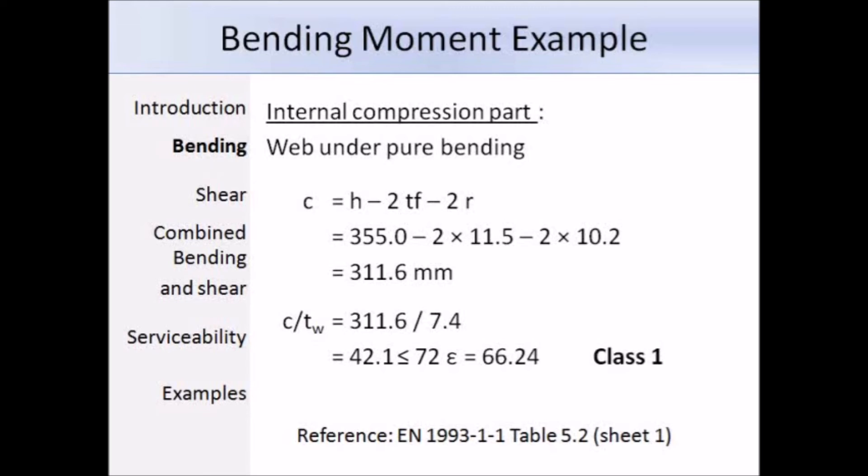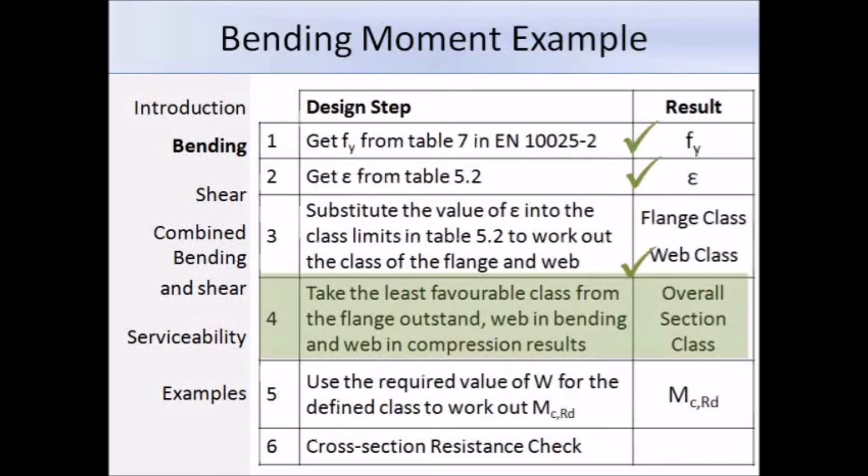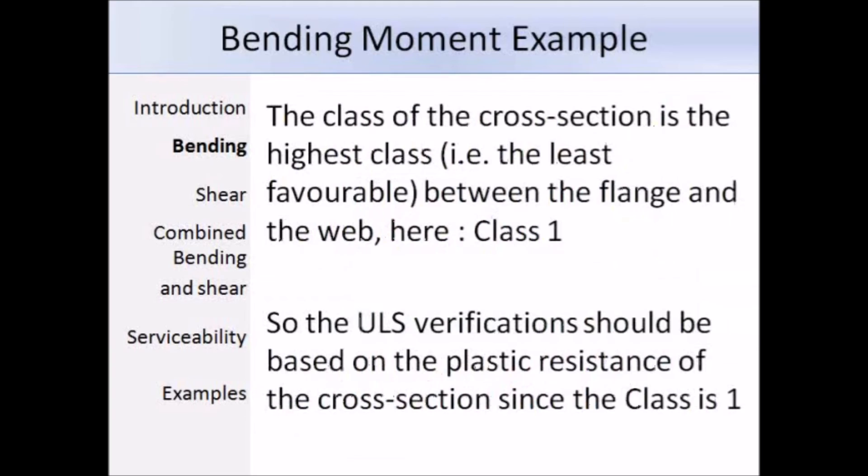Now that we have determined the classes of the flange and the web, we need to determine the overall section class. The overall class of the section is the highest class between the flange and the web. In this case, both parts are class 1. Therefore the overall section will be class 1. Now that we know the overall class, we know that for class 1 sections, ultimate limit state verifications should be based on the plastic resistance.